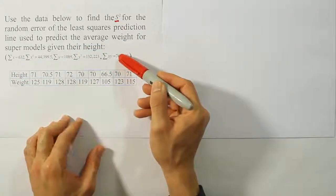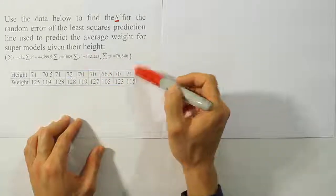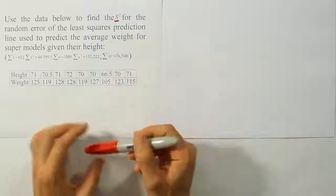They give us some nice summary data to work with and they have the raw data here but we don't need it because we have the summary values that's most important for us.